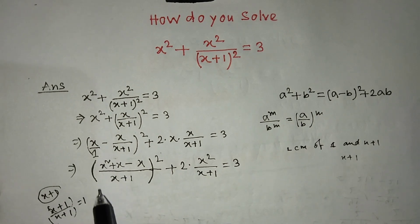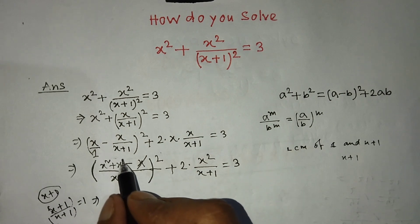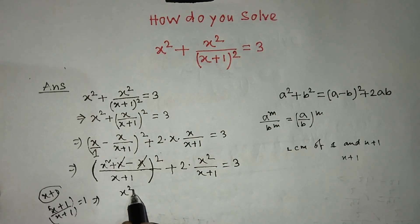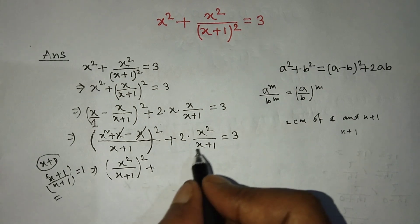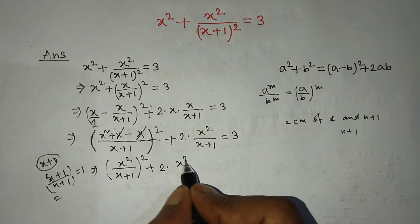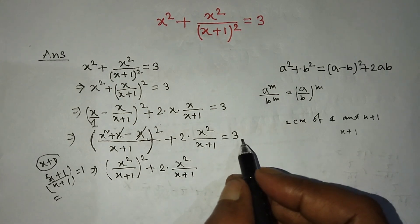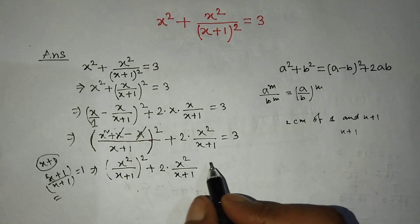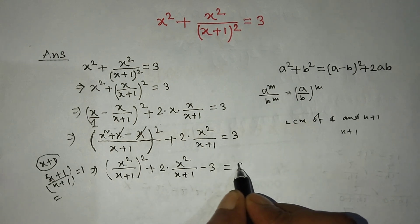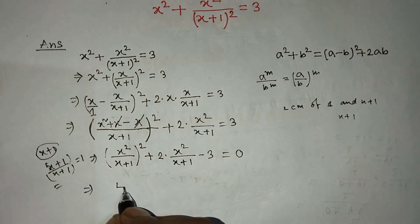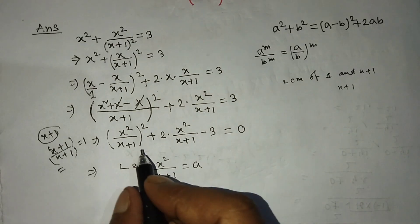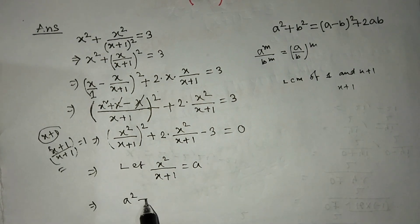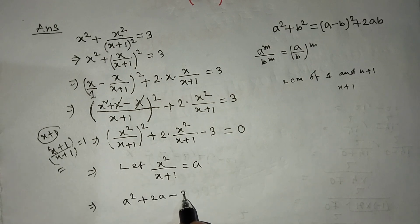After simplification, x and negative x cancel. We write x squared over (x plus 1) whole squared plus 2 into x squared over (x plus 1) equals 3. Transposing 3 to the left side gives minus 3, so the equation equals 0. Now let x squared over (x plus 1) equal A. Our equation becomes A squared plus 2A minus 3 is equal to 0.